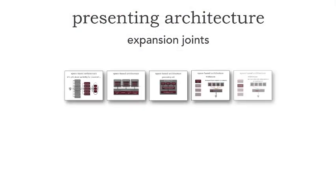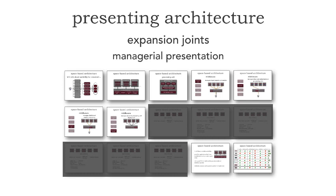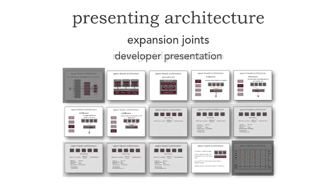Expansion joints work as follows: the idea is to fully create your presentation — I've got fifteen slides here. Rarely would I ever present all fifteen, but I create views off of those. I'm able to expand or contract my presentation per audience. For a managerial presentation, I can hide certain slides so the presentation is complete but compressed. A managerial view doesn't need that level of detail, but a development presentation does. These expansion joints allow all information to be contained in a single slide deck, and we expand or contract it by simply hiding slides.